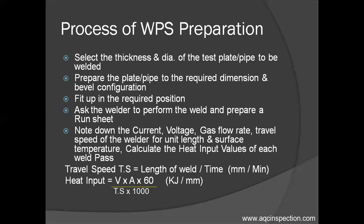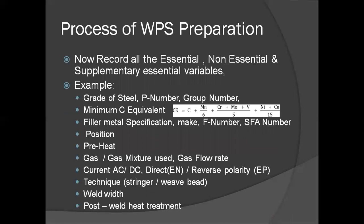The formulas for travel speed and heat input are given here. Record all the essential, non-essential, and supplementary essential variables — for example, the grade of steel, its P number and group number, minimum carbon equivalent value, filler metal specification with their F number and SFA number, the position welded, preheat temperature, gas or gas mixture used and their gas flow rate, current used and their polarity, techniques used, weld width, and post weld heat treatment requirements.